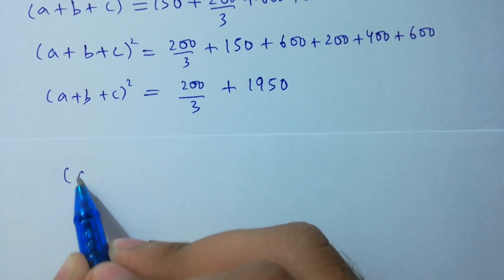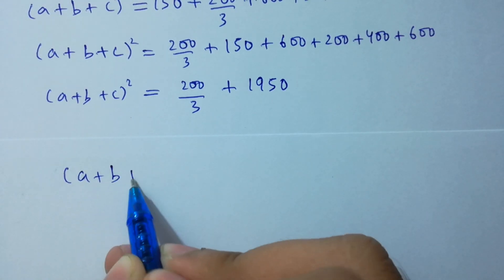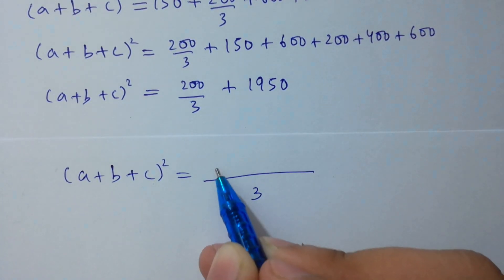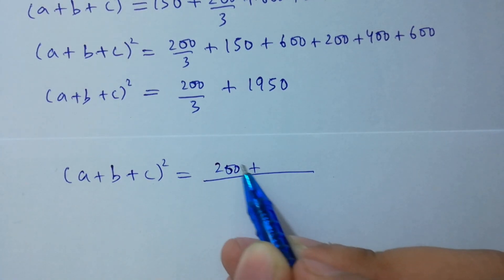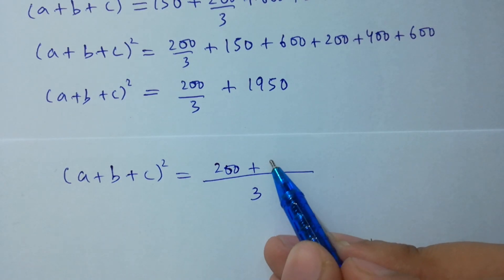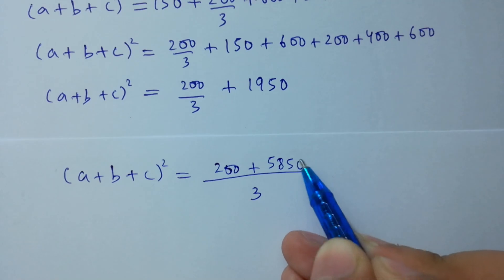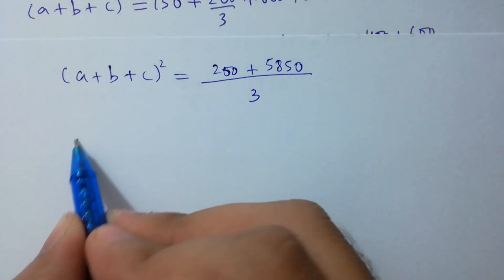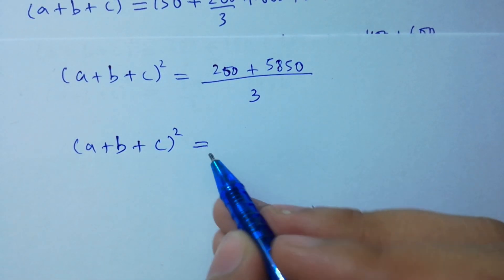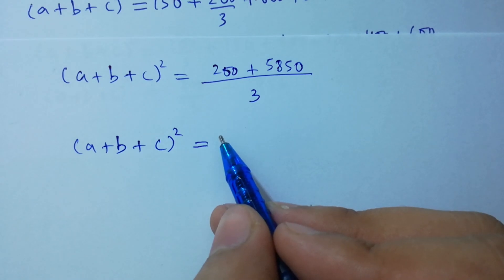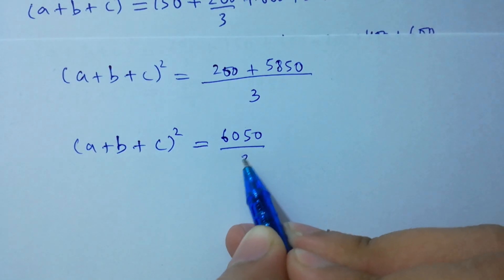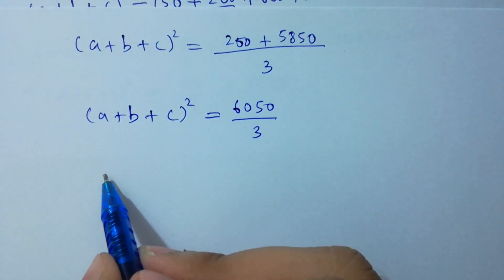So (a + b + c)² = 200/3 + 5850/3 = 6050/3. Now take the square root on both sides.